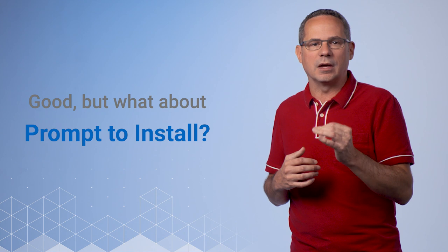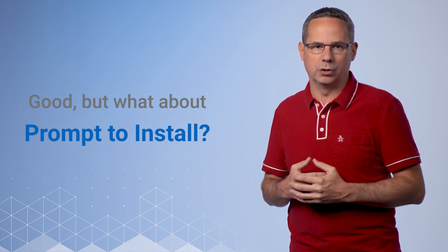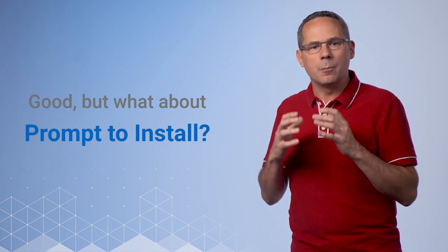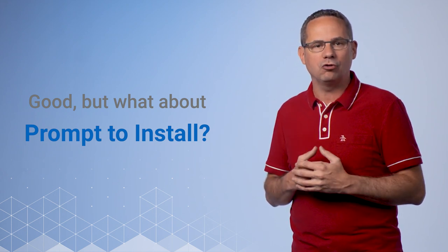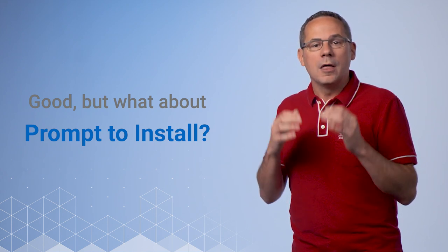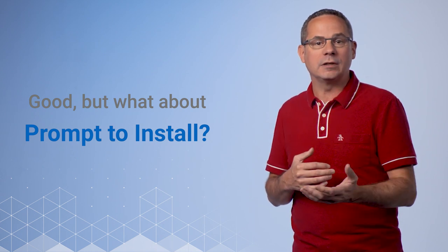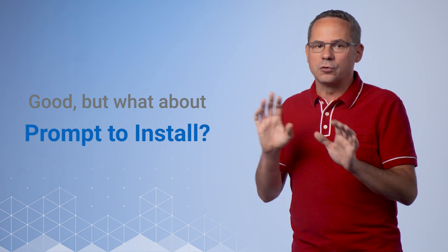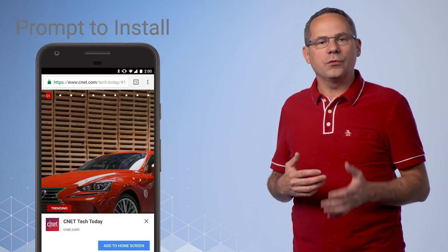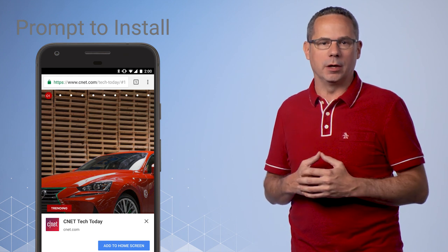So this is great, but we still need to fix that deeply buried add to home screen action. In some cases, the browser will automatically prompt the user or provide an indication that they can add the progressive web app to their home screen. The criteria for when the user is notified differs between browsers. In order for Chrome to show the add to home screen banner, it looks for three criteria.